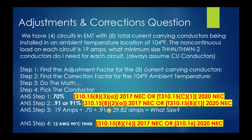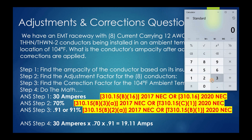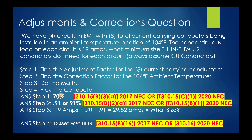Now let's verify our work using multiplication. We selected 12 gauge, which is rated for 30 amps in the 90-degree column. Multiply 30 amps × 0.70 × 0.91, and that gives us 19.11 amperes. Can a conductor good for 19.11 amps handle 19 amps of non-continuous load? Absolutely. I'll protect that 12-gauge conductor with a 20-amp overcurrent device in accordance with 240.4(D) — the small conductor rules. We're not talking motors or HVAC here with allowances under 240.4(G) — just the basics.